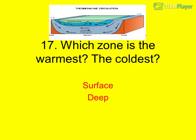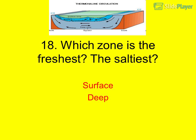Question 17: Which ocean zone is the warmest? The coldest? The surface zone is warmest; the deep zone is coldest. Question 18: Which zone is the freshest? The saltiest? The surface zone is freshest; the deep zone is saltiest.